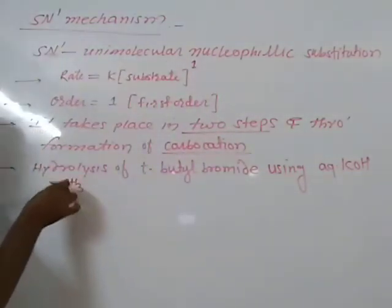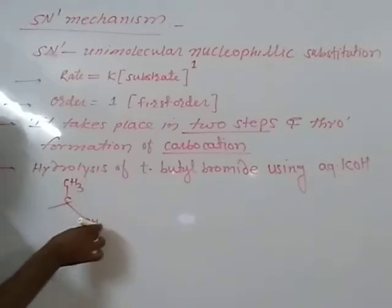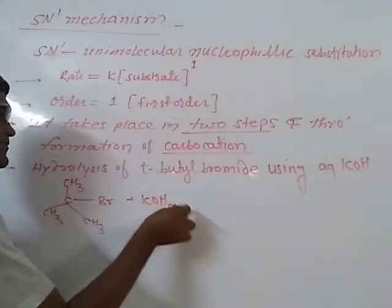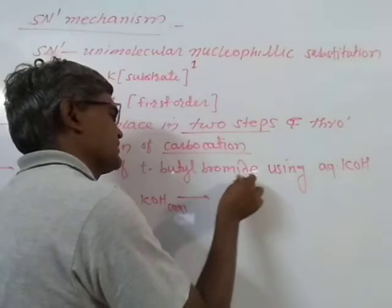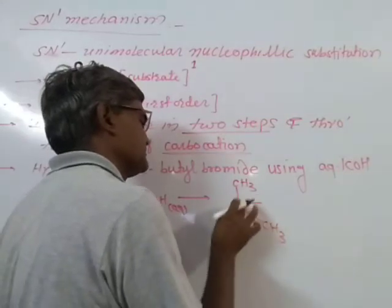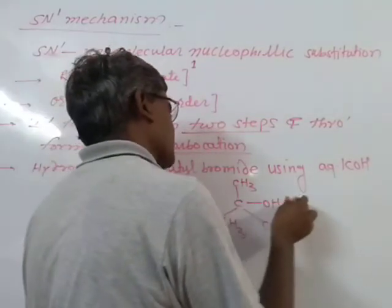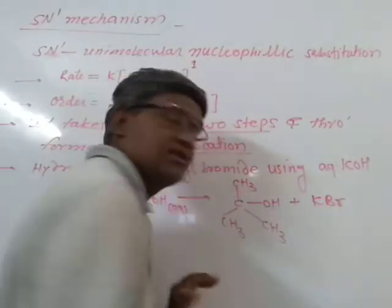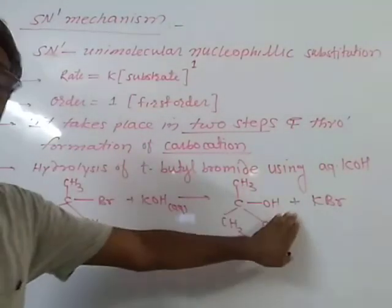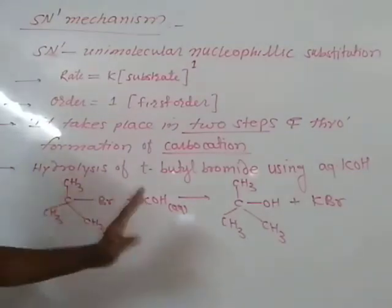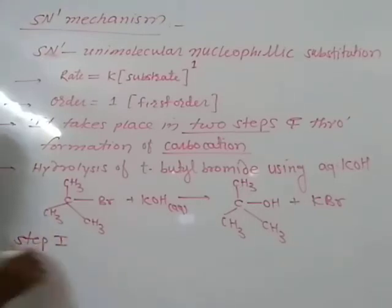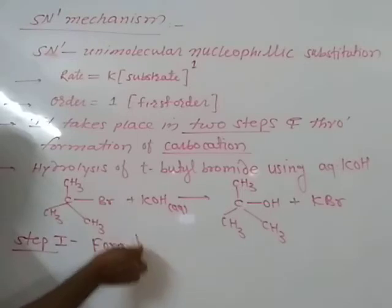Our reaction involves CH3 groups. If you are using KOH, then you get an alcohol — tert-butyl alcohol will be the product. This is the overall reaction. Now this will take place in two steps. Step 1 is the formation of a carbocation.